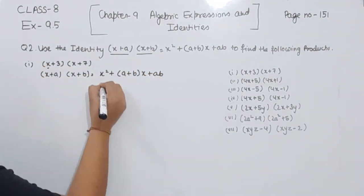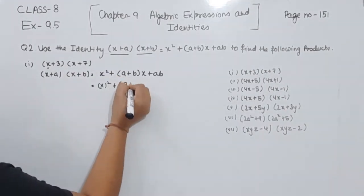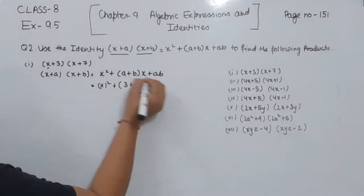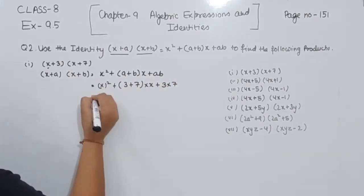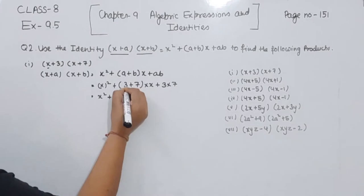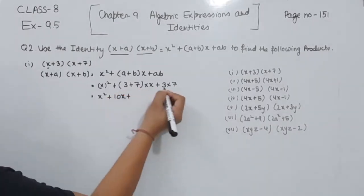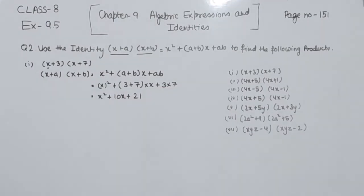Here x is x, so we get x squared plus (a + b), which is 3 + 7 = 10, giving us 10x, plus a·b which is 3 multiplied by 7 = 21. So the solution for part 1 is x² + 10x + 21.